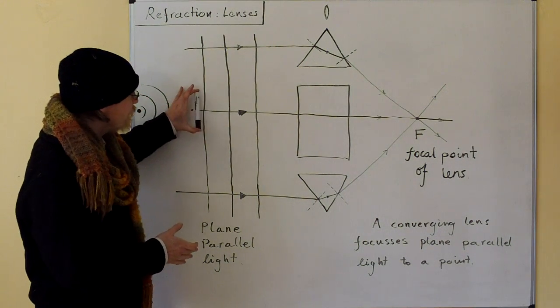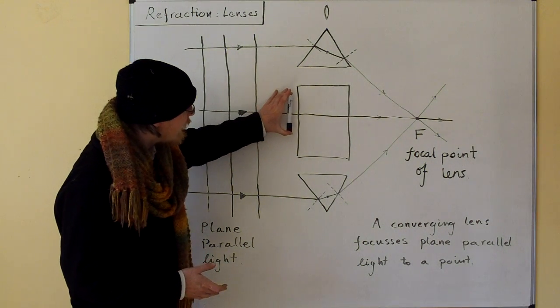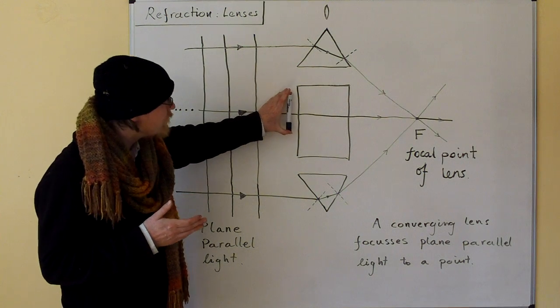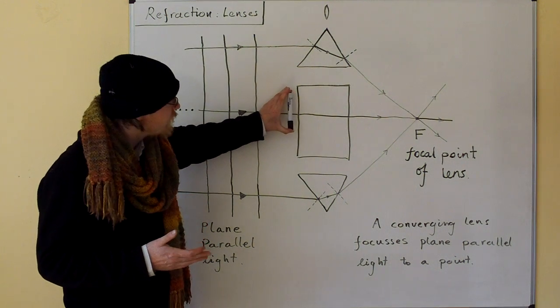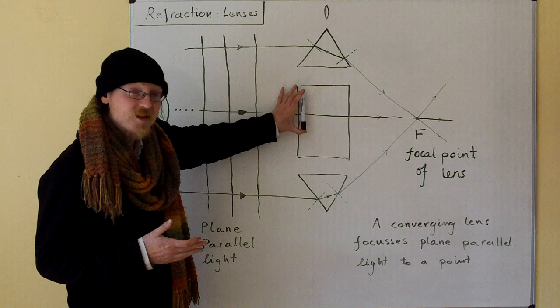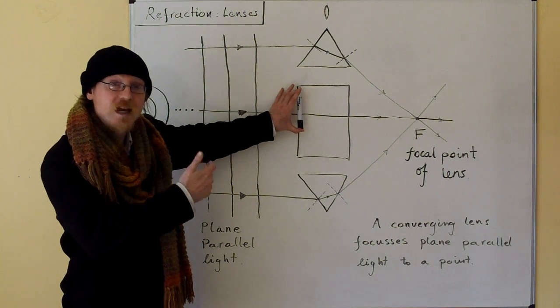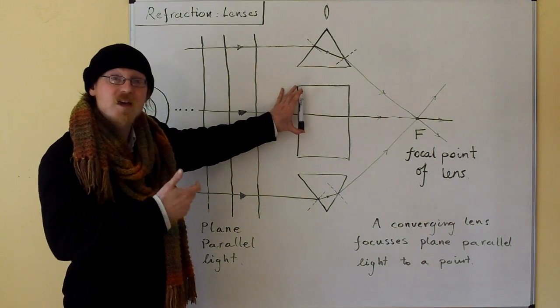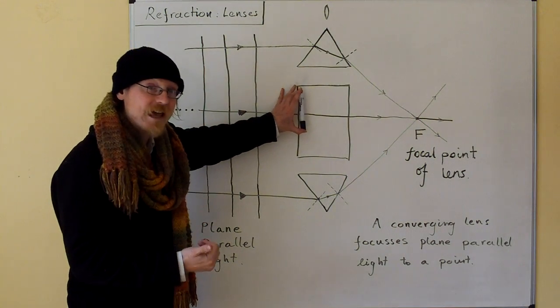As the wave front comes into the block, it's coming in straight on. So both sides of the wave front enter the glass together. So the whole wave front hitting the block slows down by the same amount across its length.